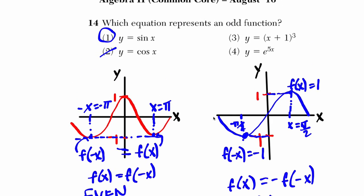Anyway, I think these two functions are neither odd nor even. Sine is an odd function, and cosine is a classic even function.